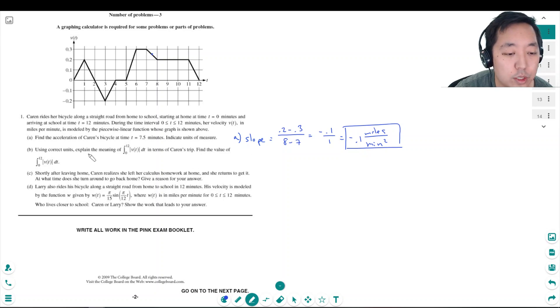Using correct units explain the meaning of the absolute value in terms of Karen's trip and find that value. The integral of the absolute value of velocity is total distance traveled. And the absolute value, it's positive this whole way except for down here. So the absolute value would be all of this.